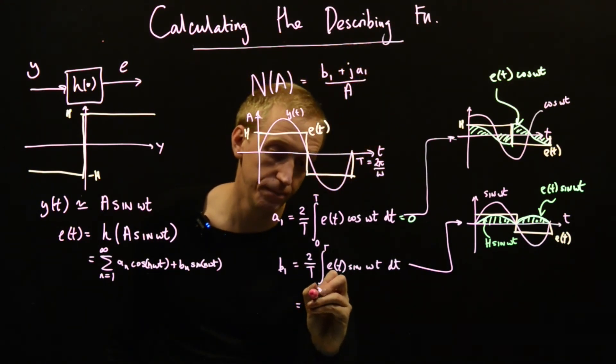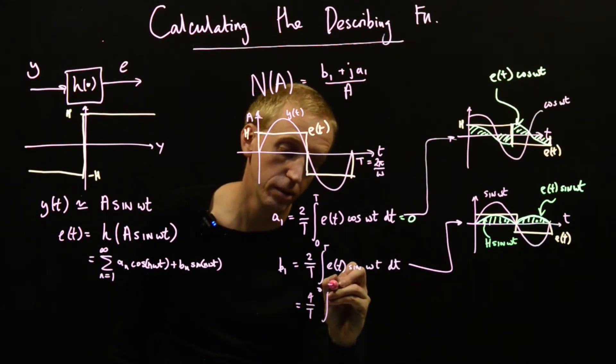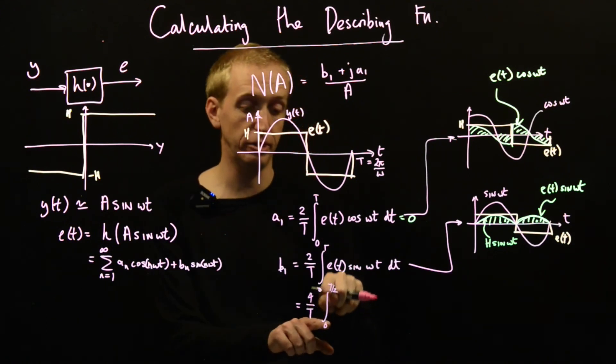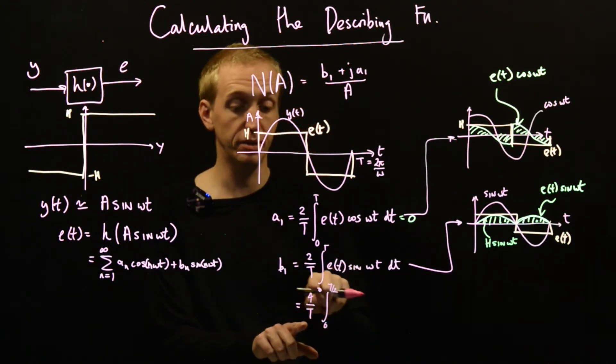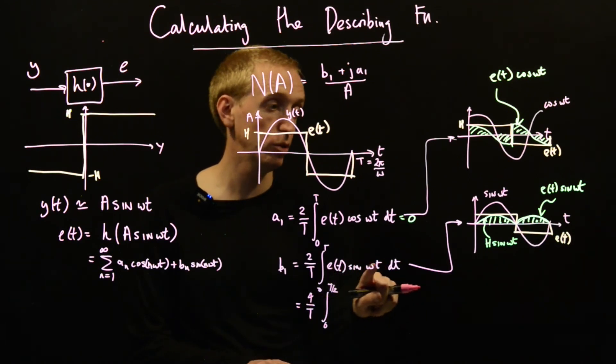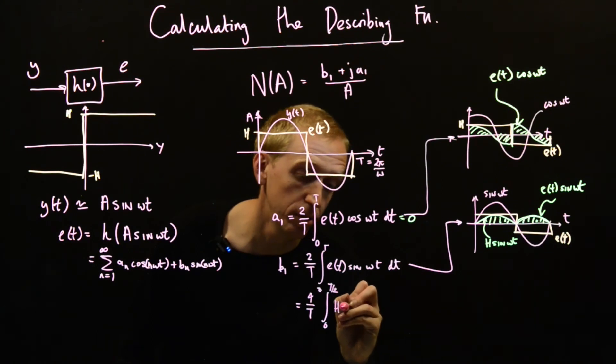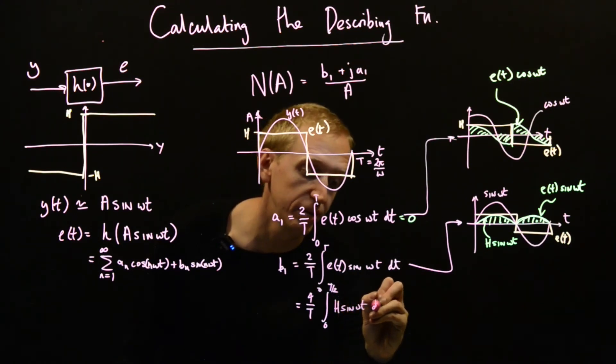So to simplify this integral, this is just equal to 4 over T integral from 0 to T over 2. So we just have to integrate over half of the period, but double the size. And now we substitute in for e(t)sin(ωt). So that's just equal to h sin(ωt) dt.